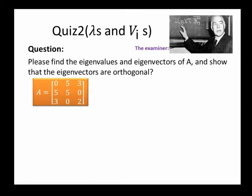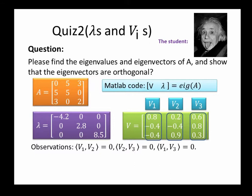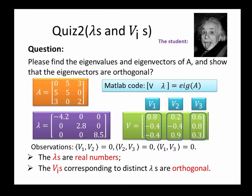Question: Please find the eigenvalues and the eigenvectors of A and show that eigenvectors are orthogonal. Using the MATLAB code, we can find its eigenvalue and eigenvectors matrix. The inner product between V1 and V2 is zero. That's true for V2 and V3, V1 and V3 as well. We can see eigenvalues are real numbers. The eigenvectors corresponding to distinct eigenvalues are orthogonal.